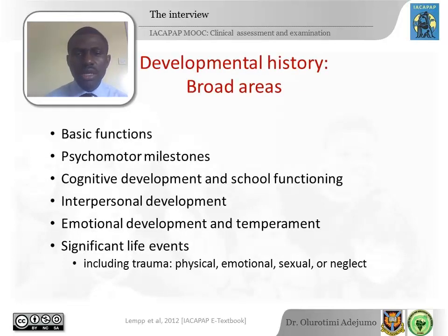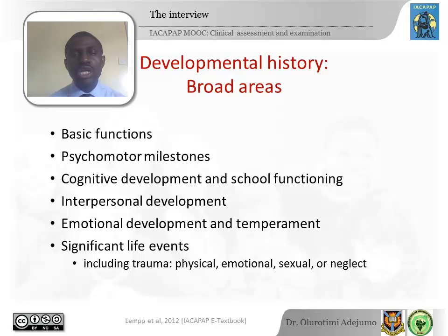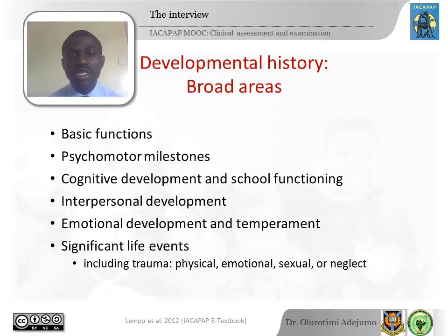There are several areas in developmental history to take note of. You need to find out about basic functions like bladder and bowel control, psychomotor milestones — when the child first sat, stood, walked, and made their first words — when they were able to separate without distress from parents, the degree of the child's vocabulary, how the child is functioning in school compared to peers, how the child interacts with siblings and non-family members, the child's temperament, frequency and severity of tantrums, and significant life events including any form of abuse — emotional, sexual, or neglect.